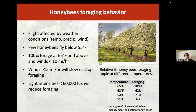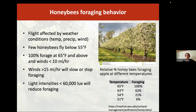Honeybees are affected by weather: temperature, precipitation, and wind all affect foraging. Honeybees will not fly much below 55°F. At 60°F and above, you'll see quite a few honeybees foraging. Wind can stop or slow down foraging if it's more than 15 miles per hour. Light intensity below 60,000 lux will also reduce foraging. These numbers contrast with other bees, giving you a sense of who's foraging when.